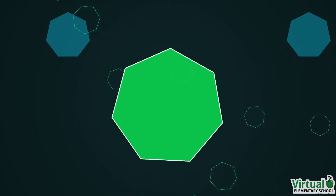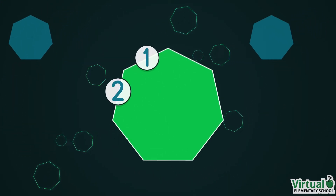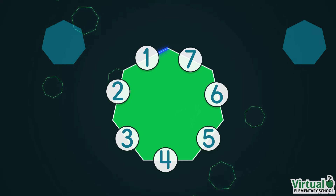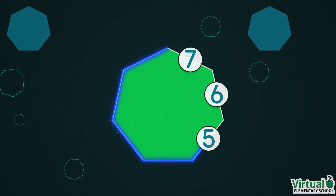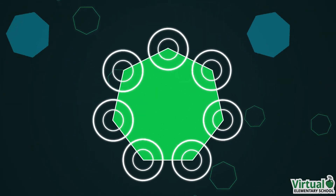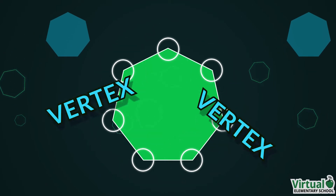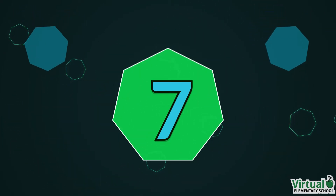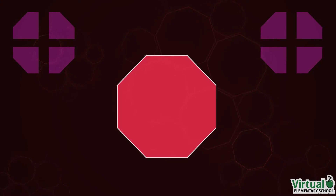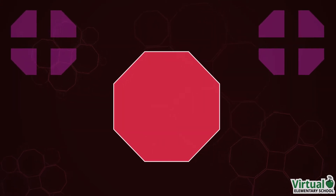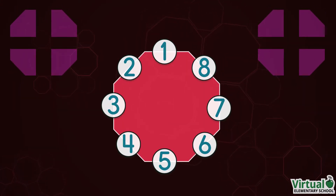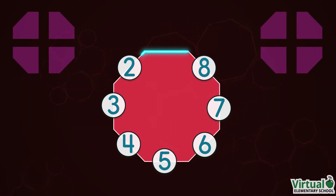Do you know? A hexagon is a shape with seven sides. It's a polygon made of straight connecting lines. Where the lines meet is called a vertex. A hexagon has seven vertices. Which polygon's next?